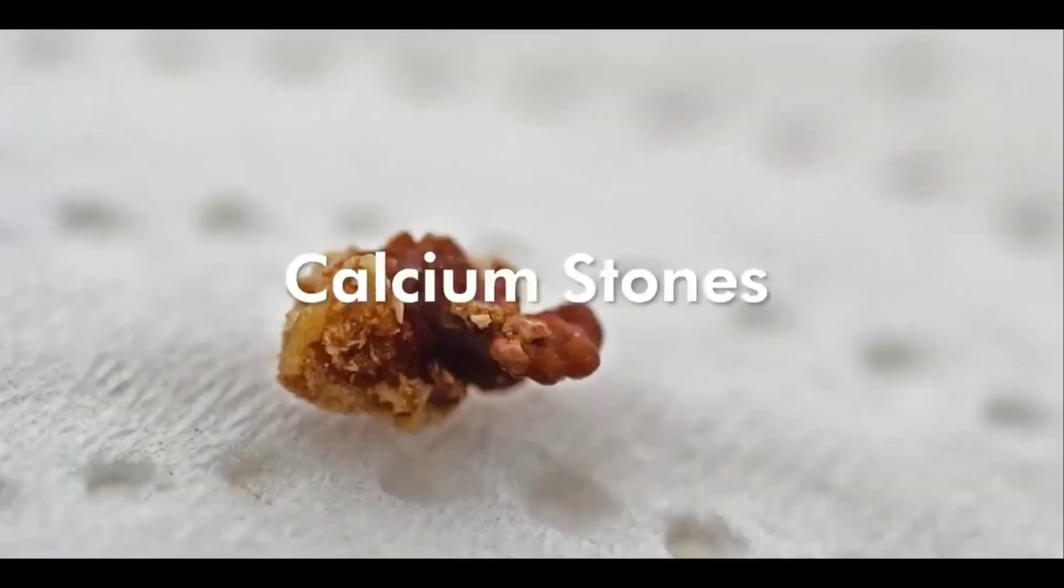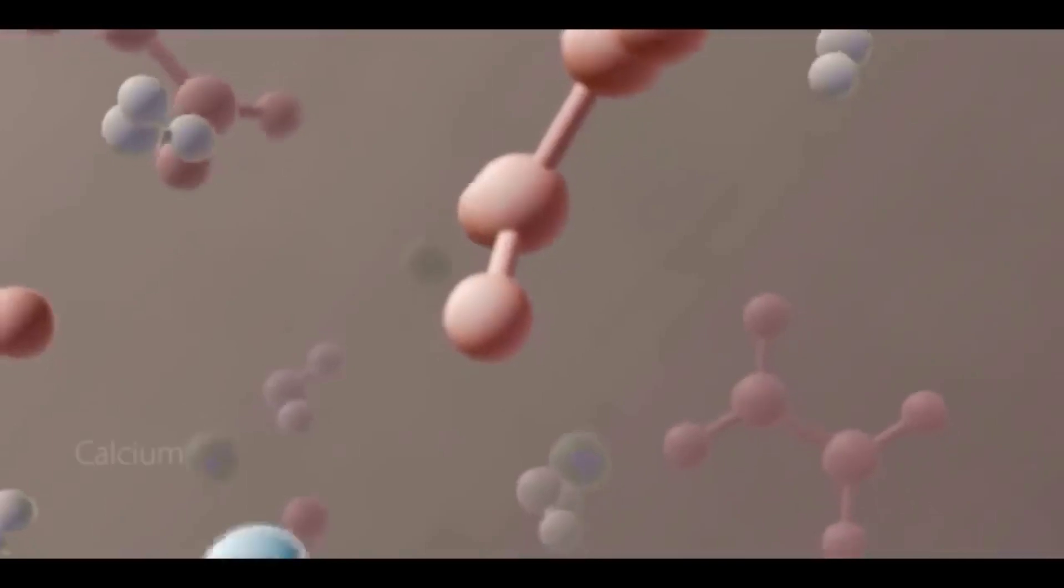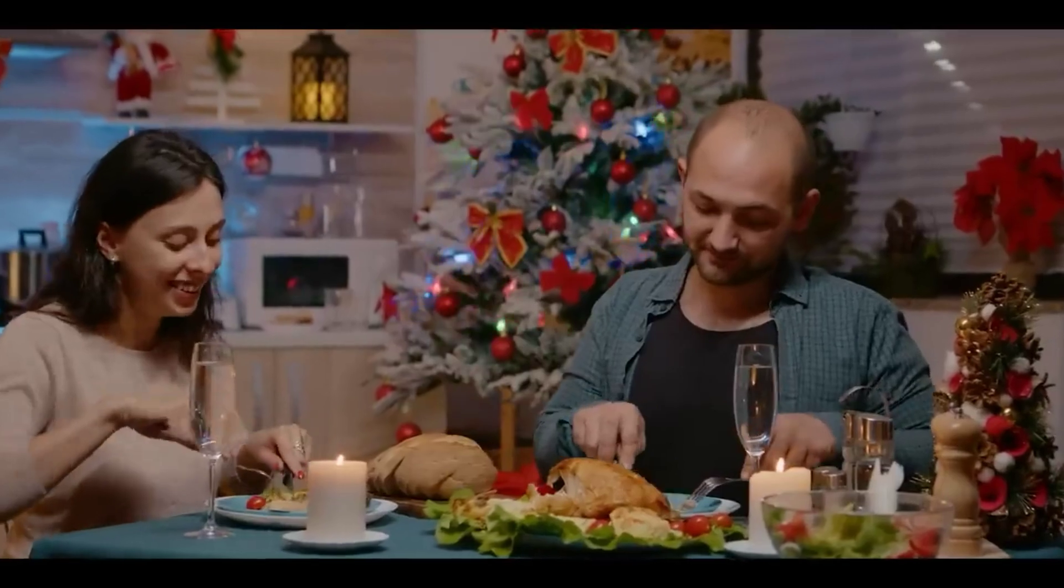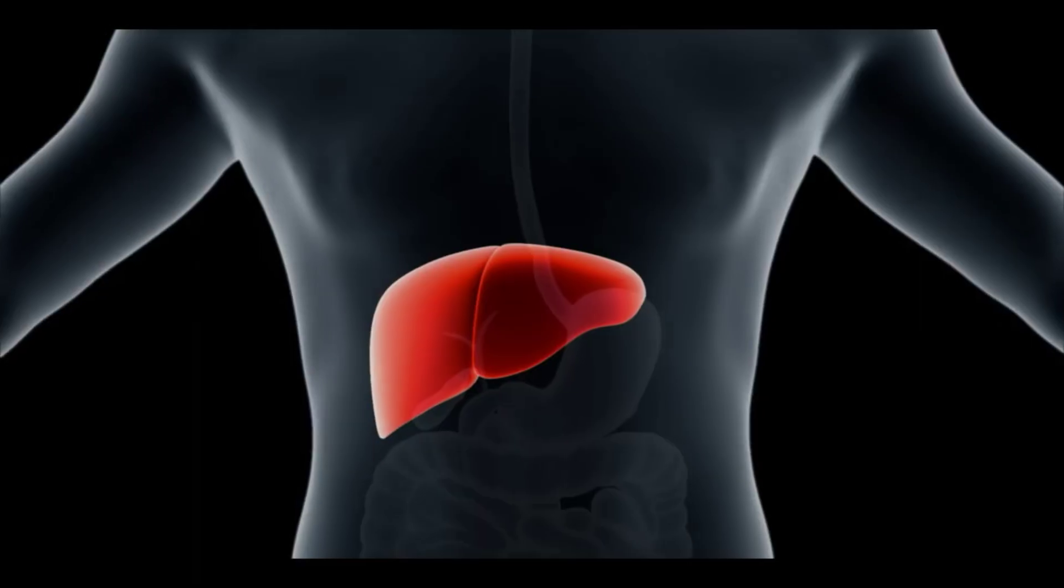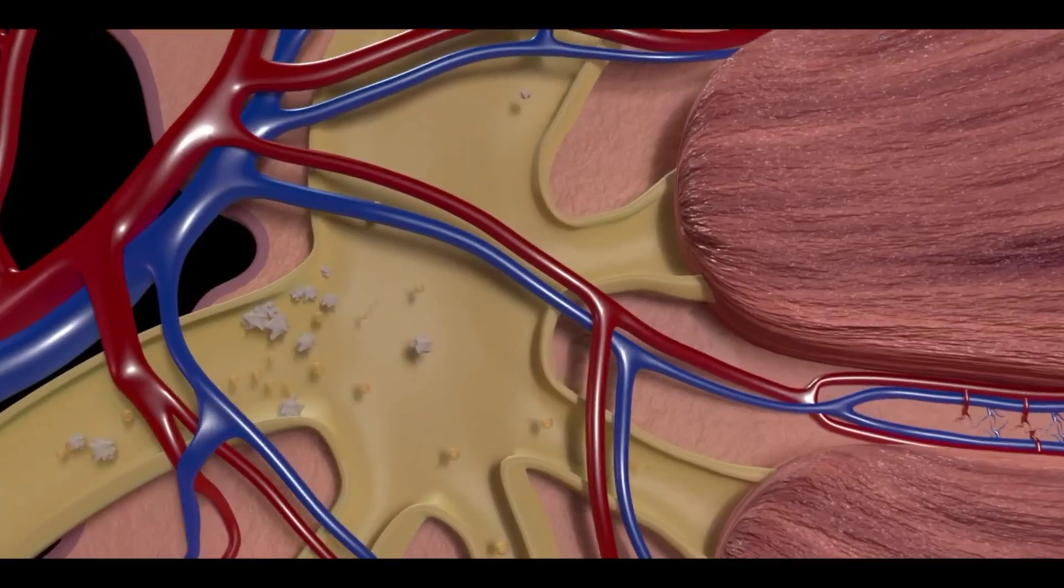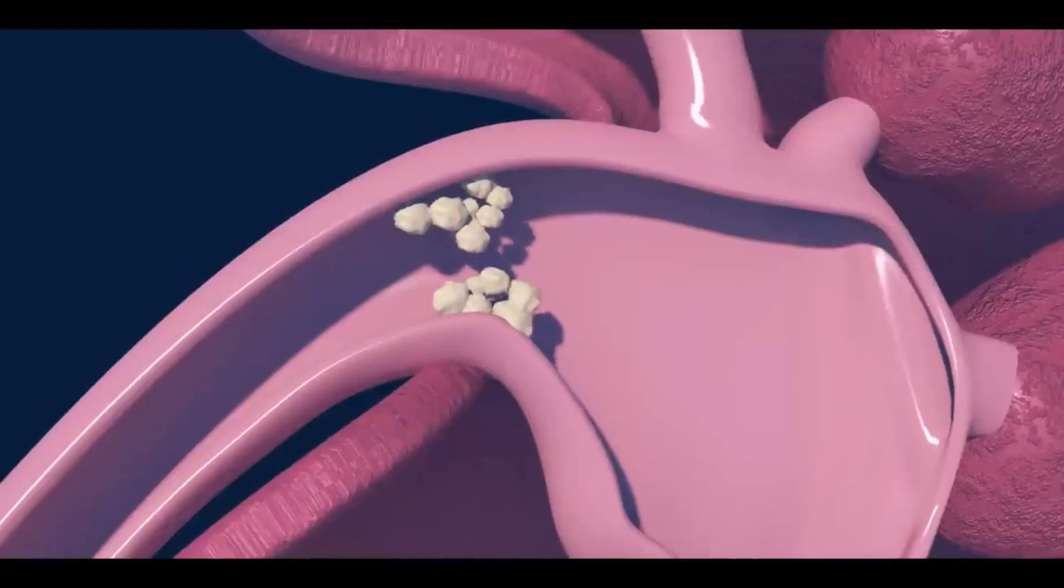Calcium stones are a combination of calcium and oxalate or calcium and phosphate. Calcium is present in our diet in large amounts, even though oxalate is produced in our liver. These substances deposit in the kidney and form calcium stones.